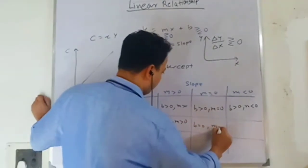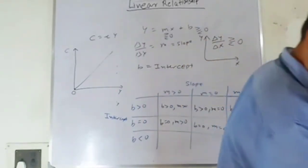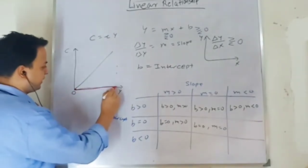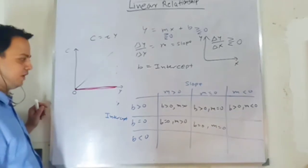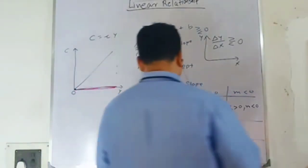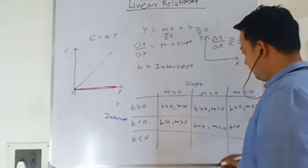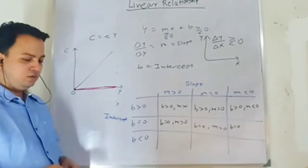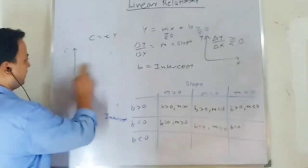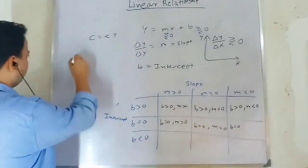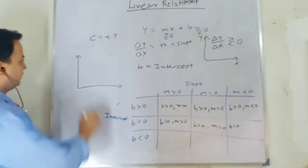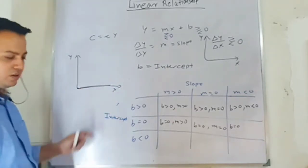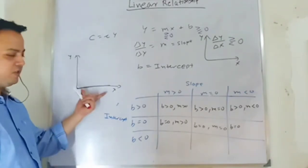When b equals zero and slope is also zero, the graph coincides with the x-axis. This kind of graph is used in certain demand contexts where the relationship lies along the x-axis. Next case: intercept is zero and slope is negative — the line starts from the origin but is negative in direction, giving a downward-sloping line through the origin.